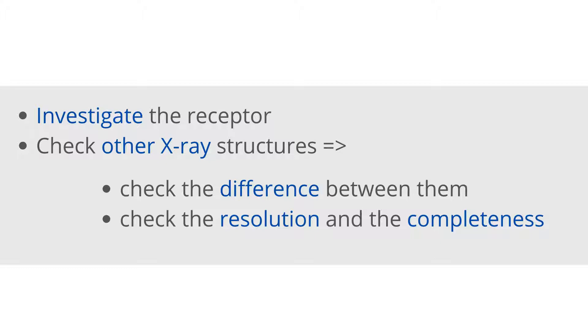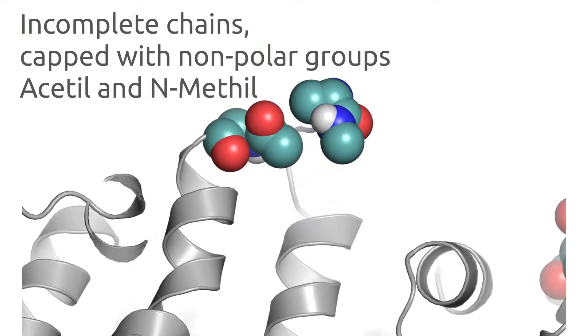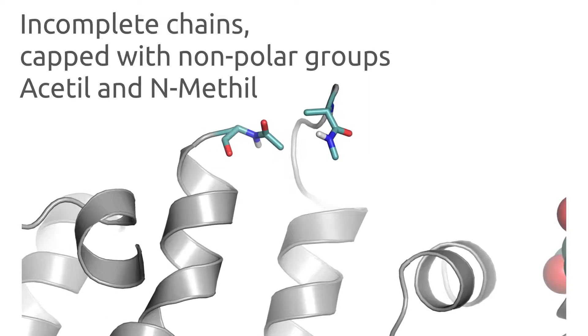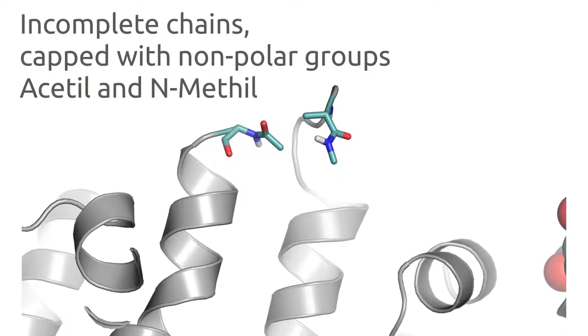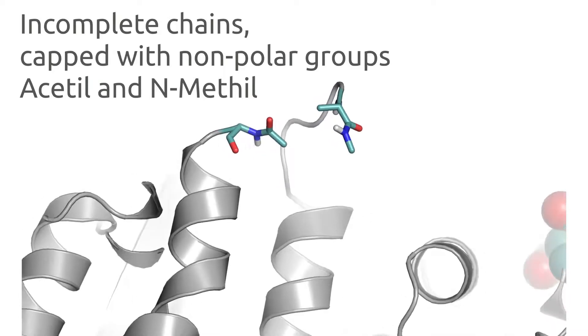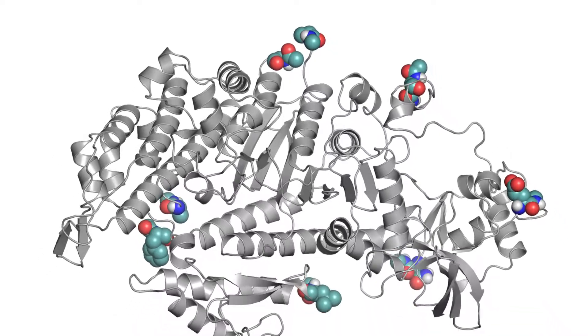An important aspect could be the completeness of the structure as well. As we saw in an earlier video, some structures are incomplete. So in order to avoid adding capping groups, in order to eliminate the additional charges at the end of the terminal, you could find the most complete structure in the first place.